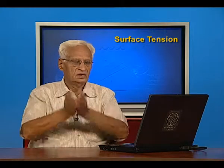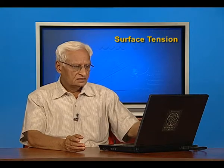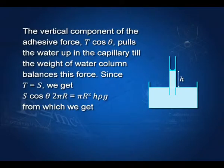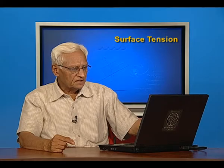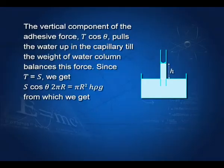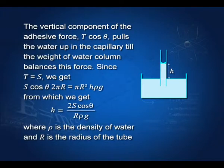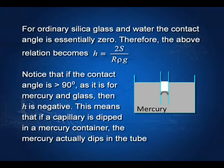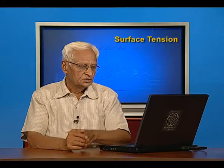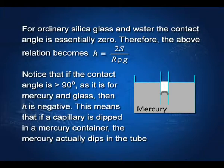If the water rises to a height h, the weight of the water column provides a downward force equal to hρg times the cross-sectional area πr². Balancing these two forces gives h = 2s cos θ / (rρg), where ρ is the density of water and r is the radius of the tube. For ordinary silica glass and water, the contact angle is essentially 0, so cos θ = 1 and h = 2s / (rρg). Notice that if the contact angle is greater than 90 degrees, h becomes negative — meaning the liquid gets depressed instead of rising.